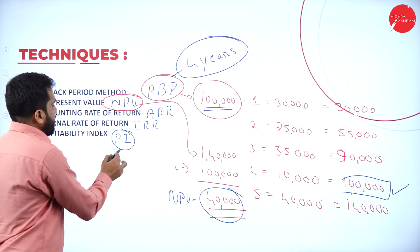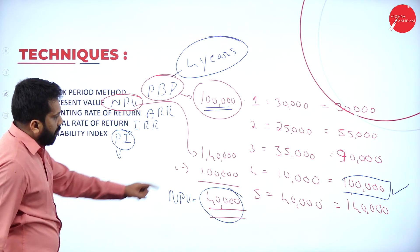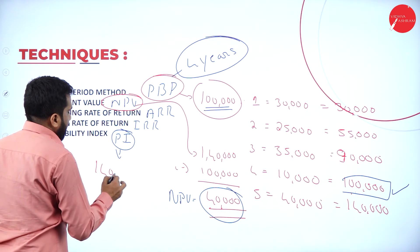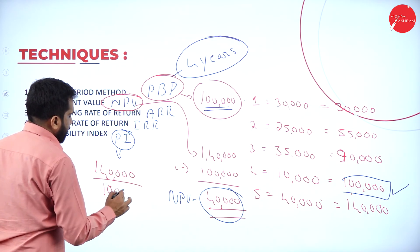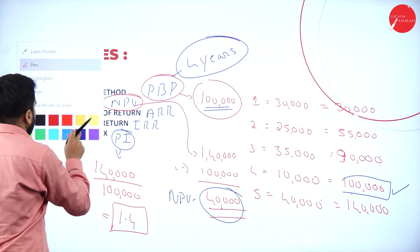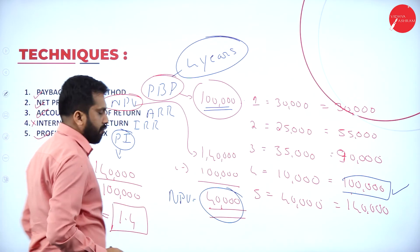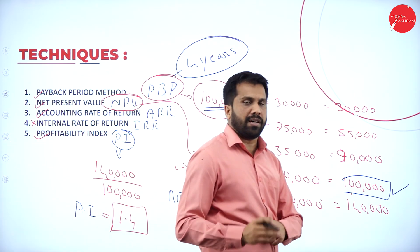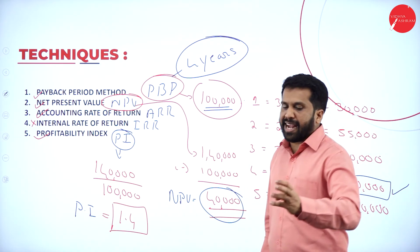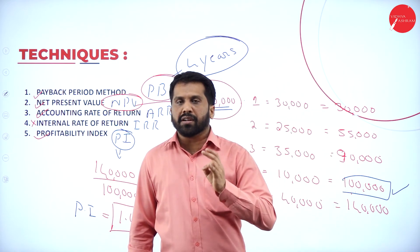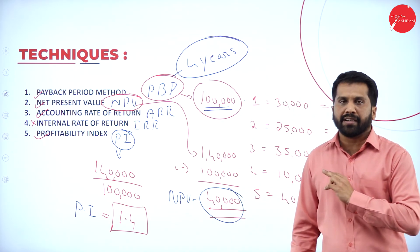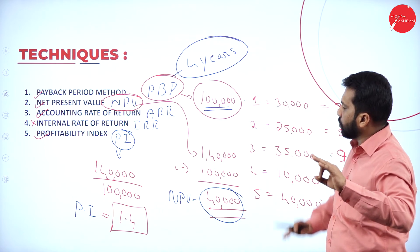For profitability index (PI): take the same values — 1 lakh 40,000 divided by 1 lakh. Your answer is 1.4. This is called the profitability index. When doing actual problems, tax, depreciation, and discount factor will also come in, but otherwise what we covered today stays the same.